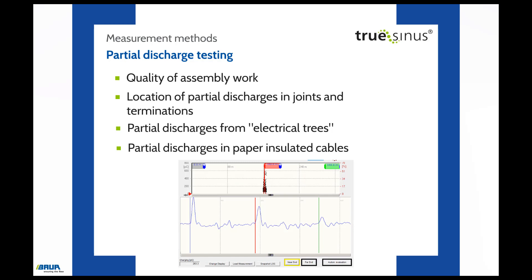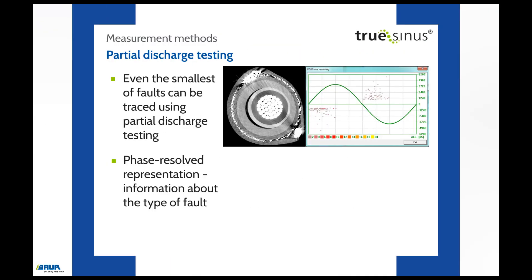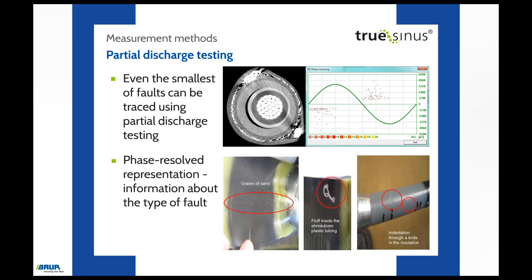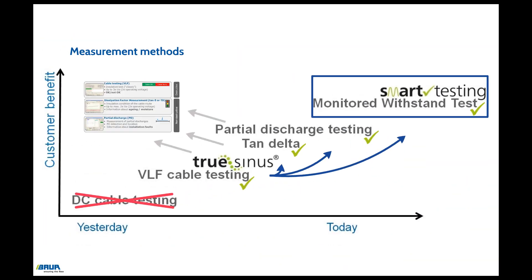Even the smallest of faults — for example, an air pocket between the insulating body and the field control — can be highlighted using partial discharge testing. The partial discharge testing also provides a phase-resolved representation, which gives information about the type of fault. This phase-resolved representation of the air pocket leads us to suspect that the cable contains a non-conducting material that is not in direct contact with the metal electrode.